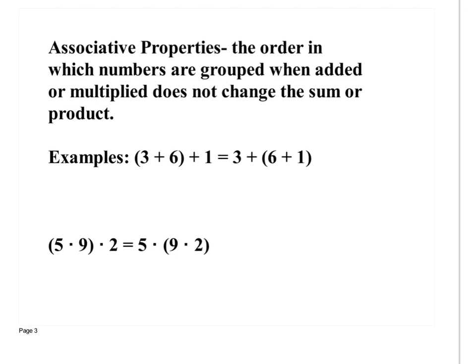Now for associative property: the order in which numbers are grouped when added or multiplied does not change the sum or product — meaning we can change the grouping but not change the answer. Commutative property changes the order; associative does not change the order. With three, six, and one: (3+6)+1 gives nine plus one equals ten, and 3+(6+1) gives three plus seven equals ten — same answer.